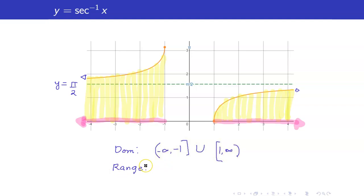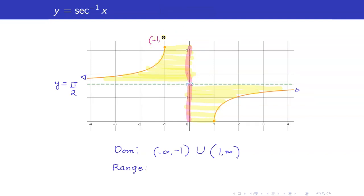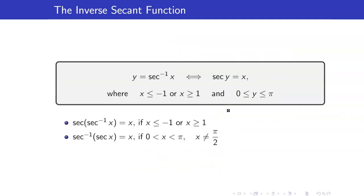For the range, we project everything onto the y-axis. Take note that the point negative 1, pi means pi is included. We have a horizontal asymptote at y equals pi over 2, so pi over 2 is not included. And the point 1, 0 means 0 is included. Hence, our range is 0 to pi, but we remove pi over 2.